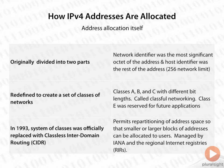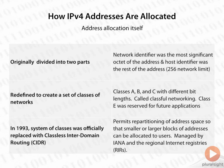In 1993, that system of classes was essentially done with. It didn't scale because we were wasting a lot of address space. A class A address with the first eight bits as network bits gives only 256 different networks, but still leaves 24 host bits — meaning 2^24 minus 2 possible host addresses per network — which is not feasible. So in 1993, that class system was replaced with Classless Inter-Domain Routing, or CIDR.